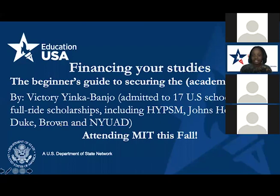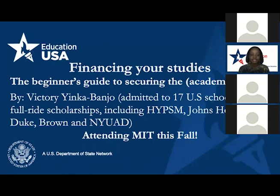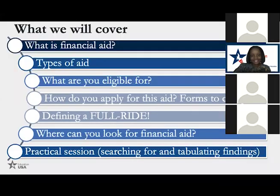I'm talking to you about financial aid, financing your studies, and understanding what financial aid generally means. I was admitted to 17 US schools on full ride scholarships and in total admitted to 23 schools, including HYPSM — Harvard, Yale, Princeton, Stanford, MIT — as well as Johns Hopkins, Duke, Brown, NYU, and NYU Abu Dhabi. I eventually decided on MIT because that was my dream school.